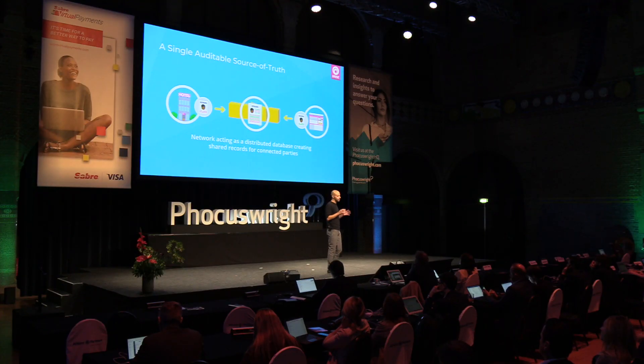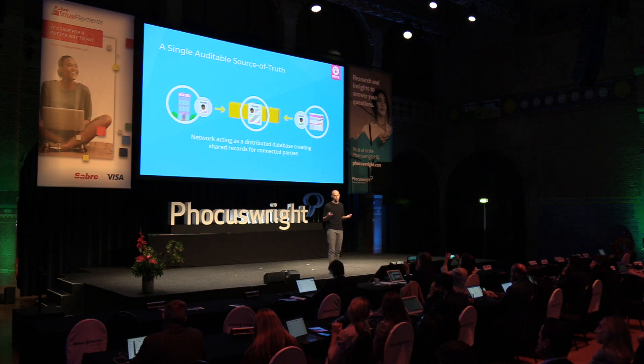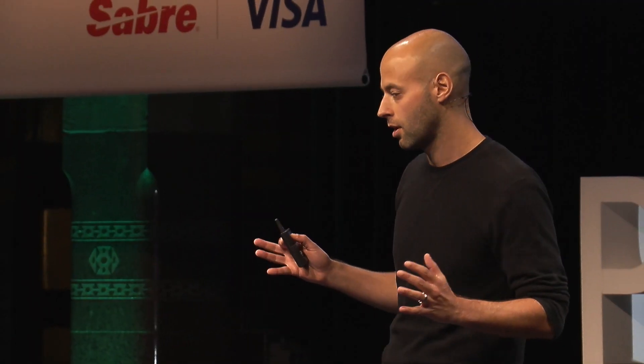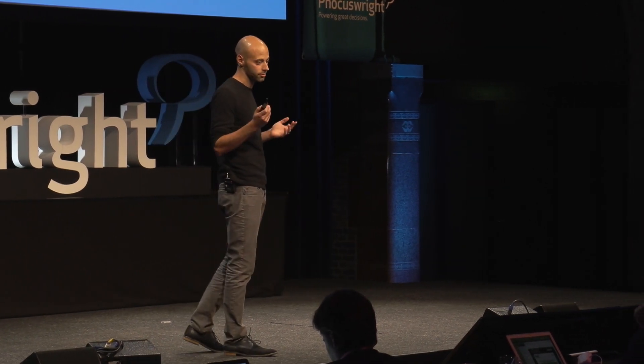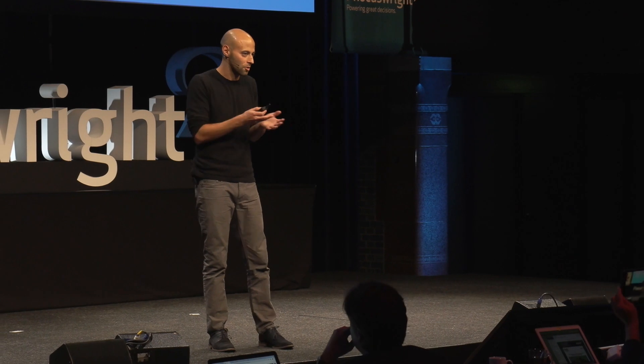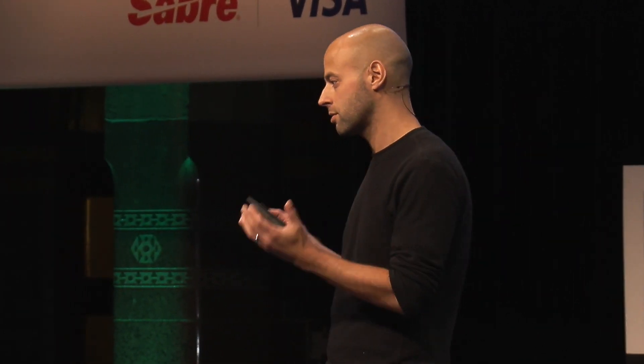Thanks to DLT, we now have a single auditable source of truth for each booking that both hotels and point-of-sale partners can trust at all times. This makes it possible to automate certain business processes, such as commission payments and payouts. The current fragmentation of data makes commission reconciliation highly inefficient and expensive. But now that we have a trusted shared record containing up-to-date booking information with attached commissions and the rules attached, this can now be automated.